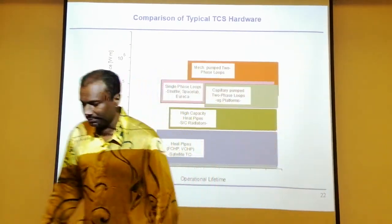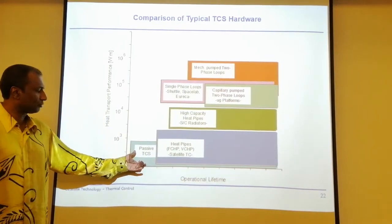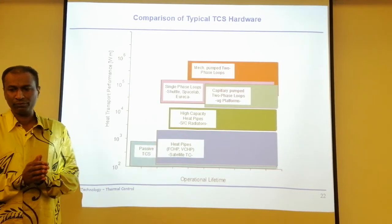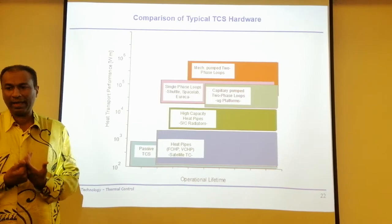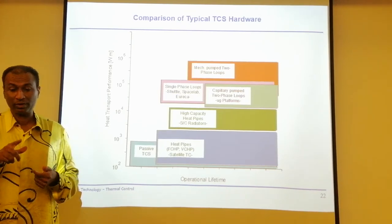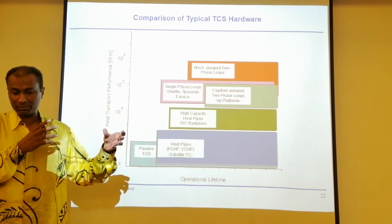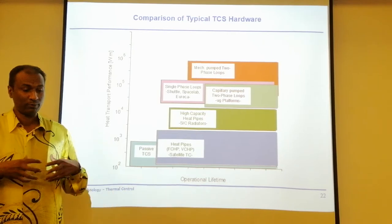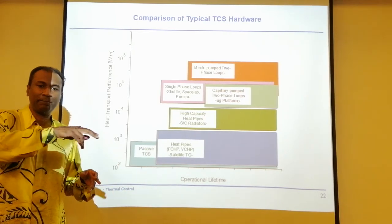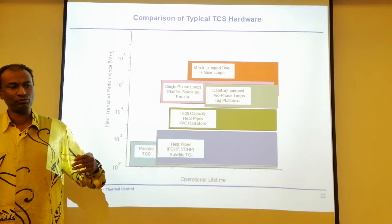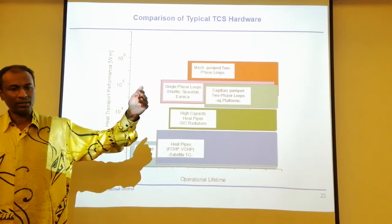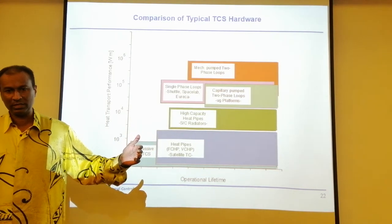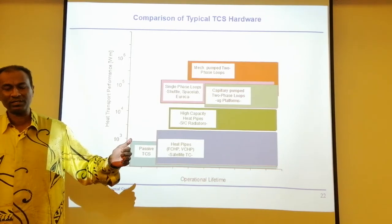Another option is passive thermal control. If you have a heat pipe and don't attach a pump to it, flow happens naturally through the capillary effect in the pipe and the surface tension of the liquid. Technically, you get a very passive flow — remember, heat flows from a hot spot to a colder spot, and that transportation happens without electricity.